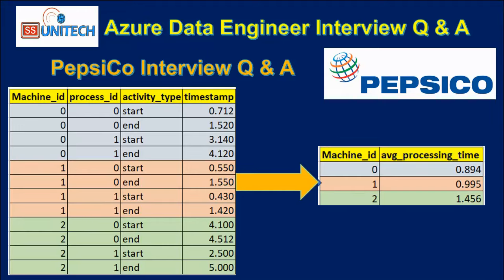Focusing on machine ID 0, we can see activity IDs 0 and 1 — two types of activity IDs. These activity IDs indicate when the machine was started and when it was stopped. In the activity type column we see 'start' and 'end'. If the process ID changes, then again the machine starts and ends. In total we have three machine IDs: 0, 1, and 2, along with process IDs and the activity type.